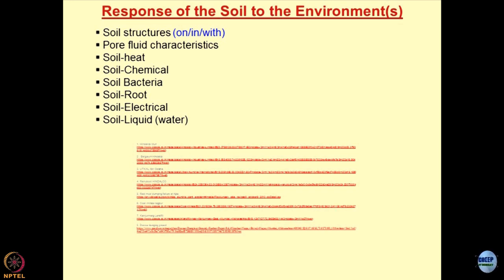Soil-chemical interaction: contaminants getting discharged either inside or on the soil mass create a soil-chemical interaction, and we want to see what happens after this interaction occurs. Soil-bacteria interaction: pathogenic discharges — if sludges are not treated properly and you pile up these sediments somewhere, they become a part of the geo-environment.